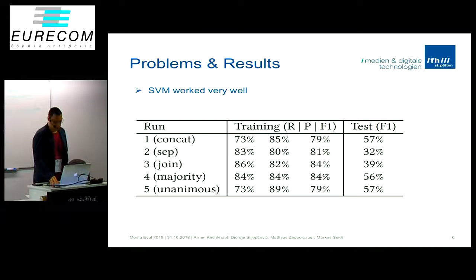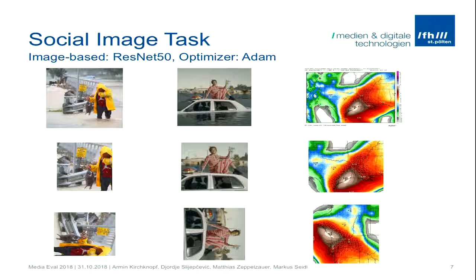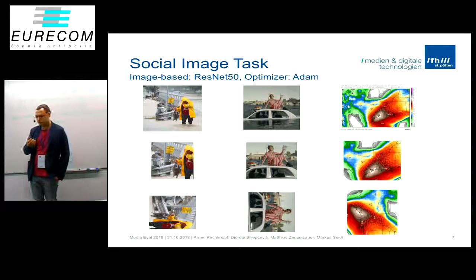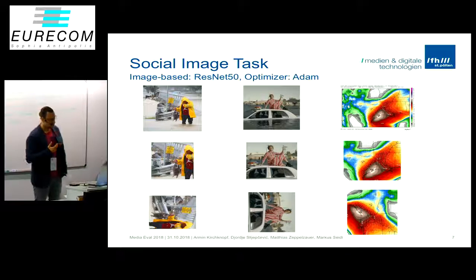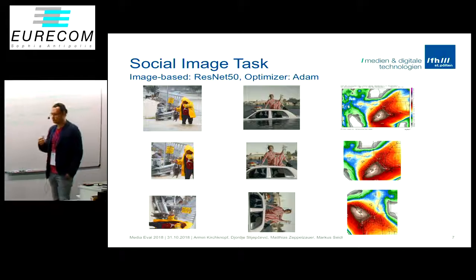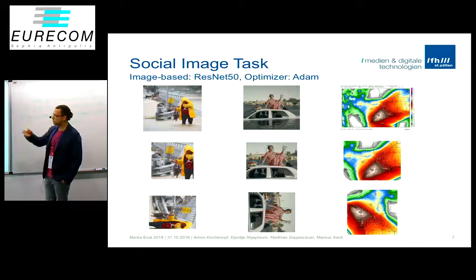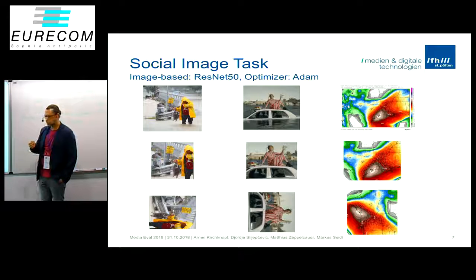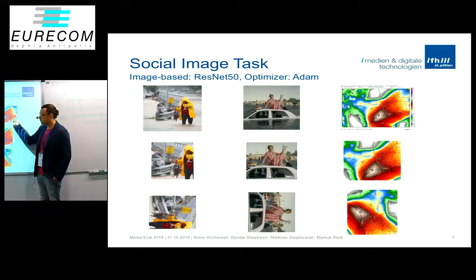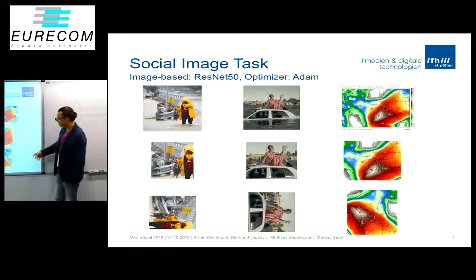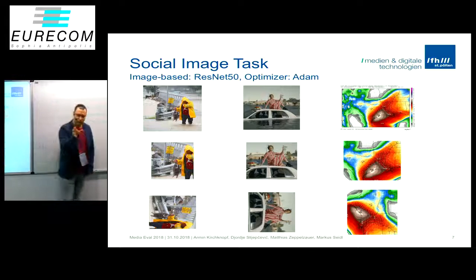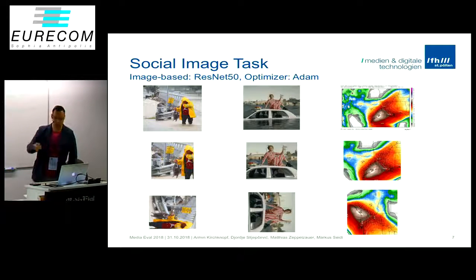Moving on to the social image task: we had a look at the data and found it was a little bit unbalanced. We tried a very basic approach — we reduced the dataset, split it 80-20 into training and test sets, and tried to do some data augmentation to improve our training. We extracted patches from the middle of the provided images, and then did additional pre-processing like rotating 90 degrees right or left and flipping or mirroring the images to improve our set of training images.